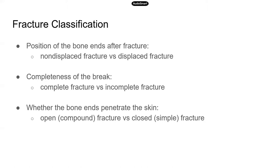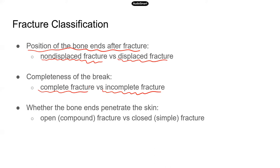First, position of the bone ends after fracture: if the ends of the bone retain the normal position, that is a non-displaced fracture; if the ends of the bone are out of normal alignment, then that's a displaced fracture. In terms of completeness of the break, if the bone is broken through, that's a complete fracture; if not, that's an incomplete fracture. As to whether the bone ends penetrate the skin — if it does, that's an open or compound fracture; if not, that's a closed or simple fracture.